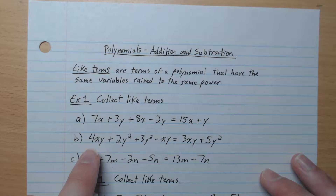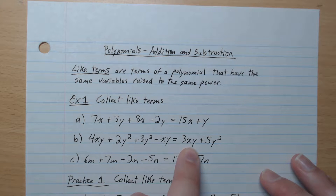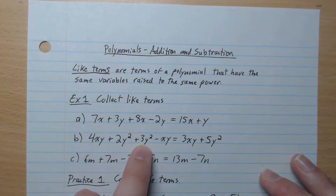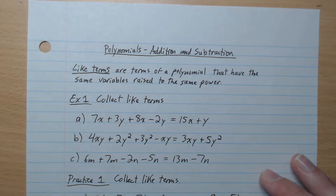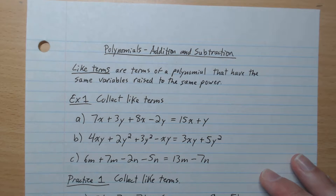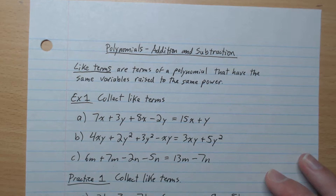Example B: 4xy minus 1xy gives 3xy; 2y squared plus 3y squared gives 5y squared. Example C: 6m plus 7m gives 13m; negative 2n minus 5n gives minus 7n.